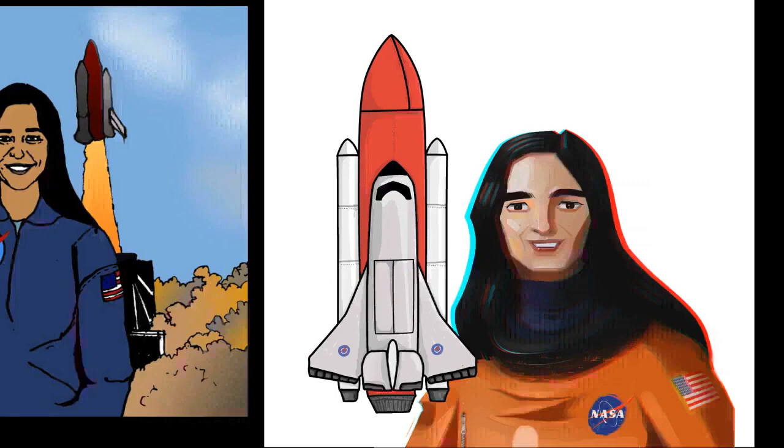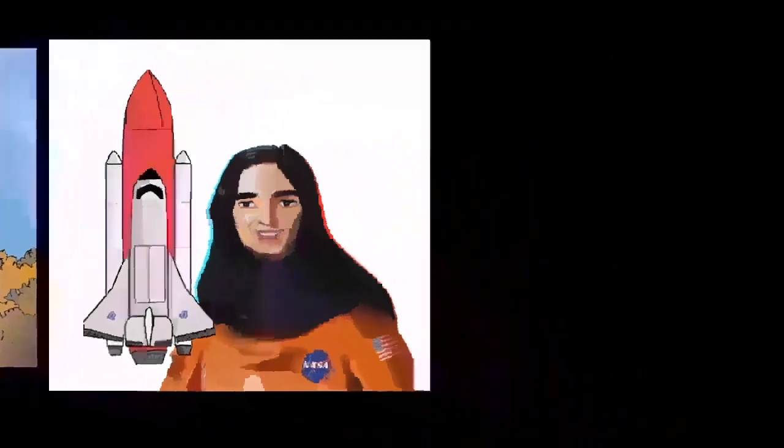After the disaster, space shuttle flight operations were suspended for more than two years, similar to the aftermath of the Challenger disaster. Construction of the International Space Station ISS was put on hold. The station relied entirely on the Russian Roscosmos State Corporation for resupply for 29 months until shuttle flights resumed with STS-114 and 41 months for crew rotation.